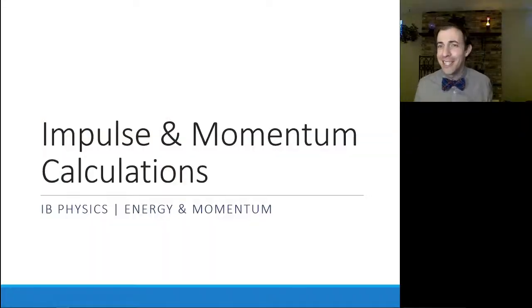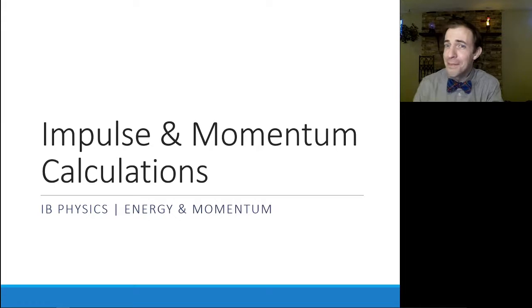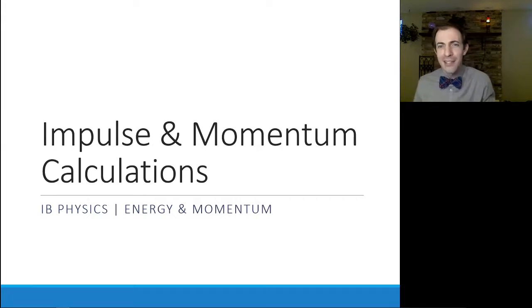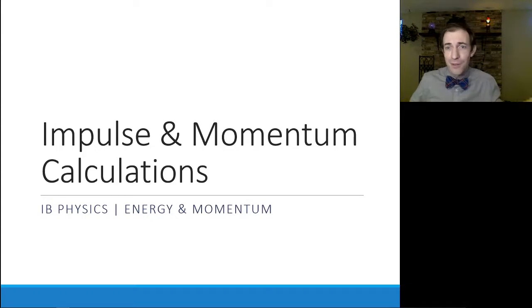In the last video we introduced the concept of impulse as a way to change an object's momentum, but we didn't really use any numbers. In this video I want to add some numbers to show how you can use impulse to actually calculate a change in momentum, and if you know a change in momentum you can figure out how its velocity changes, and figure out any force or time components based on that impulse.